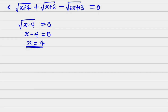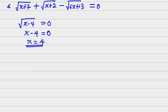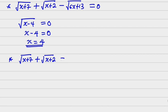The second one is going to be a bit lengthy but we'll do it together. The second situation is: root of (x plus 7) plus root of (x plus 2) equals root of (6x plus 13), taking the minus term to the other side.